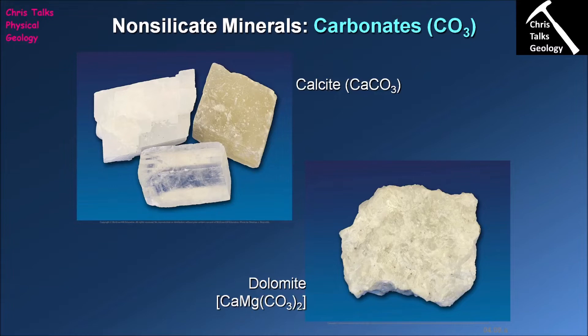This is going to correspond to section 4.9 of your textbook. There are several classes of non-silicate minerals, which includes groups like the carbonates, the sulfates, the sulfides, the oxides, the halides, and the native minerals. We're going to go through these groups, look at an example or a couple of examples from each group, think about the chemical formula, and discuss a couple of the diagnostic features associated with each group.